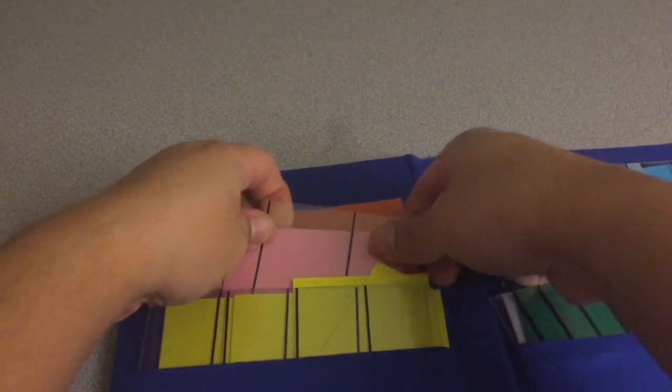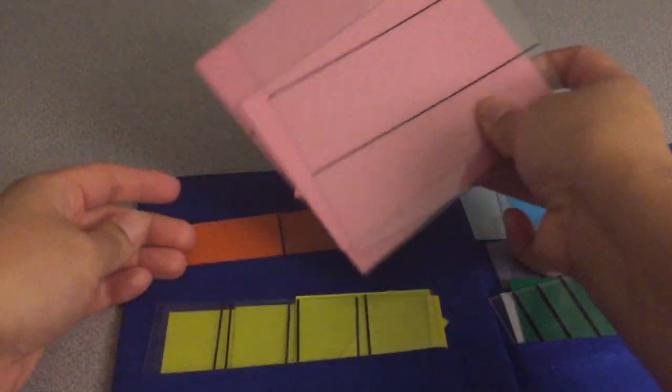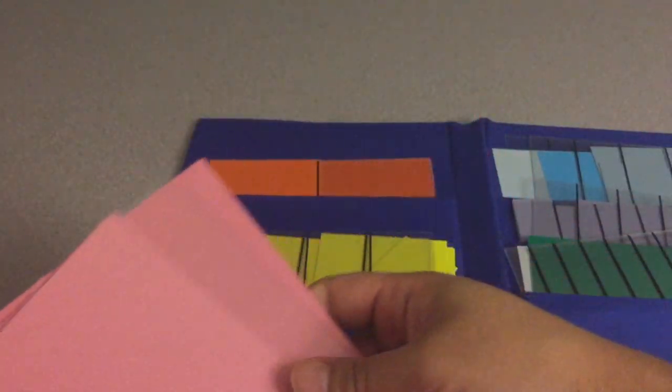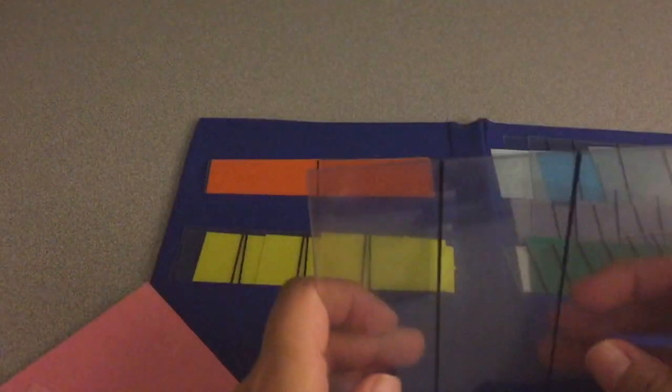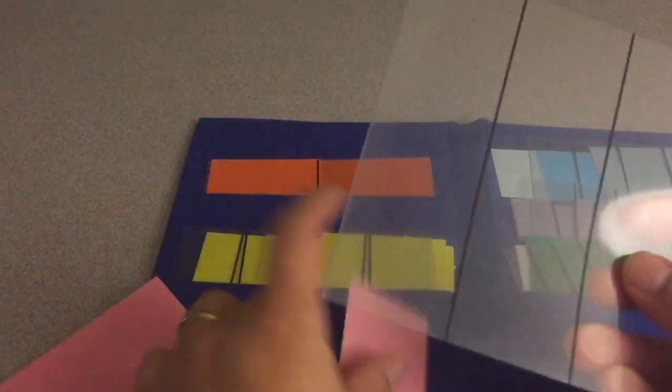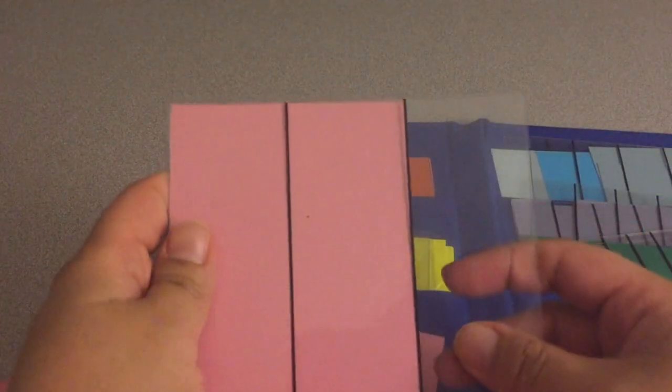And then on the next one we have thirds. So we have the thirds overlays, two of them. And this makes the one third, the two thirds, and the whole.